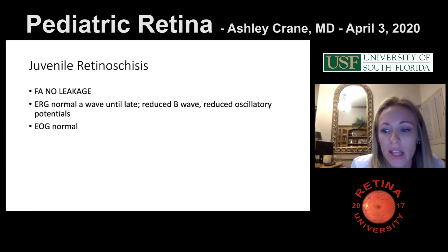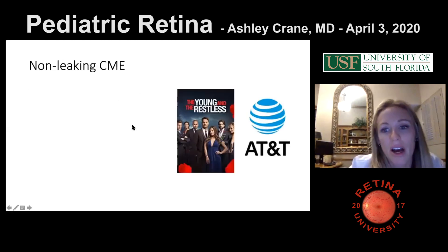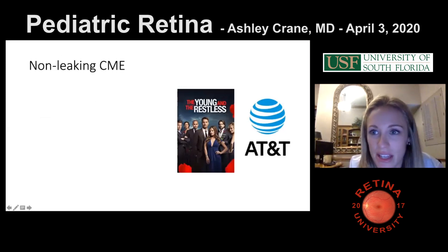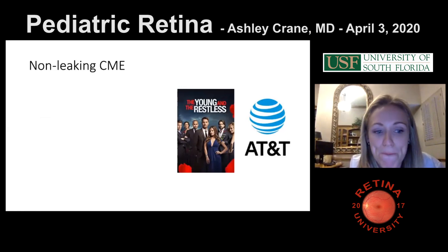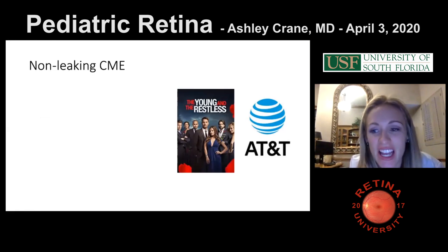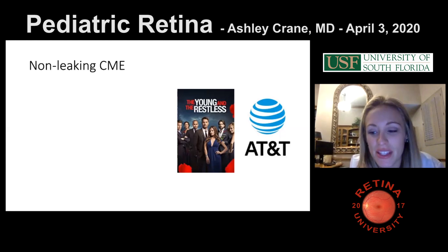For non-leaking CME or cystoid spaces in the fovea/macula, there's a mnemonic: 'The Young and the Restless use AT&T.' J = juvenile X-linked retinoschisis, U = Usher's syndrome, N = niacin (can go in both leaking and non-leaking categories), G = Goldmann-Favre, and the AT&T letters represent various drug toxicities including anti-neoplastic drugs.